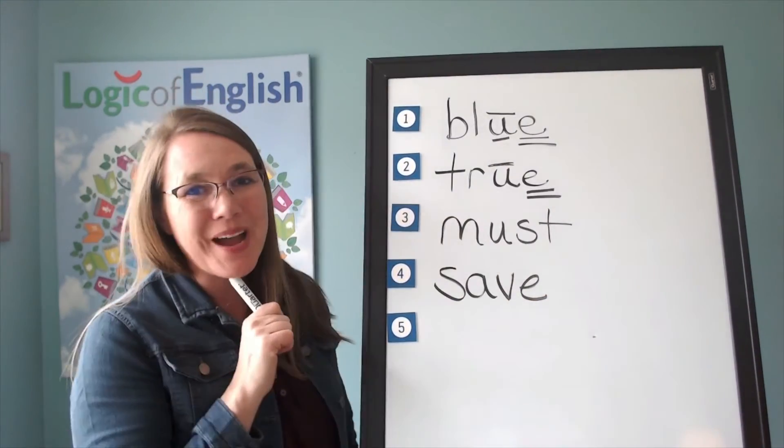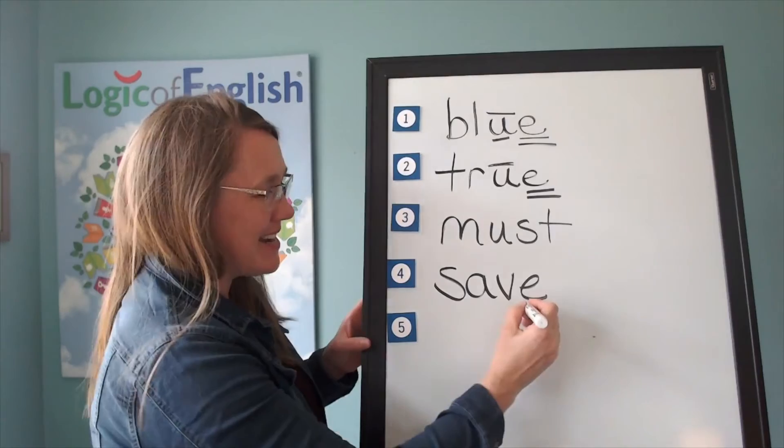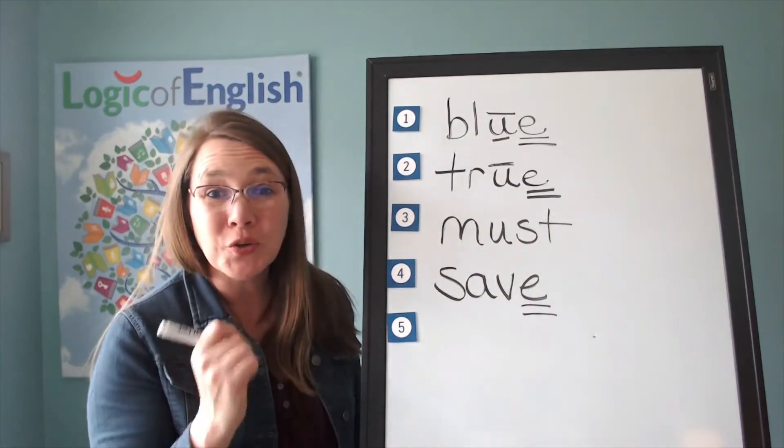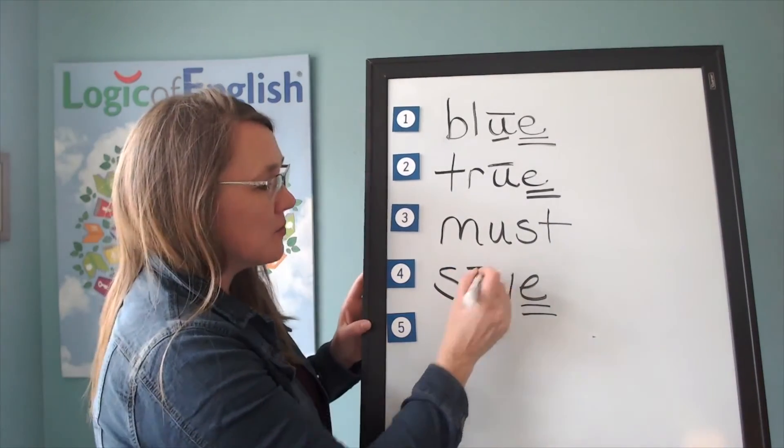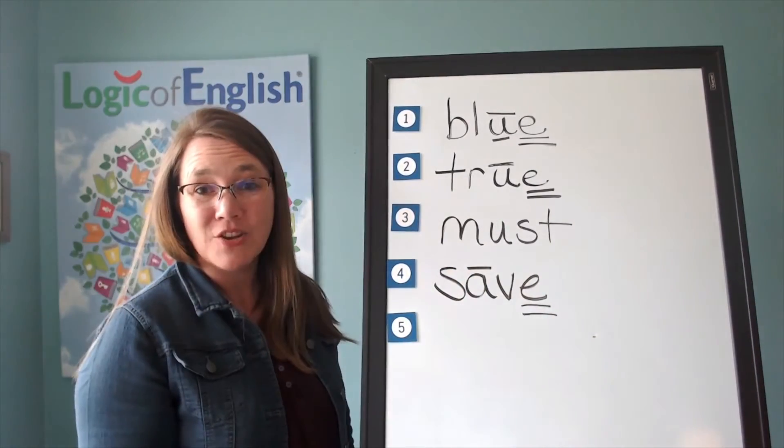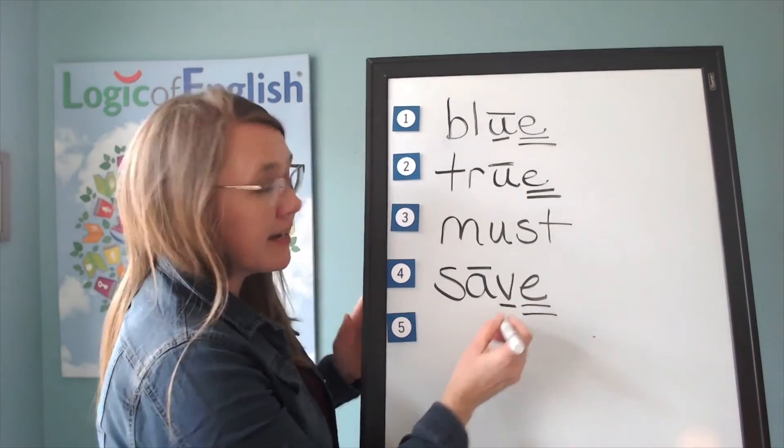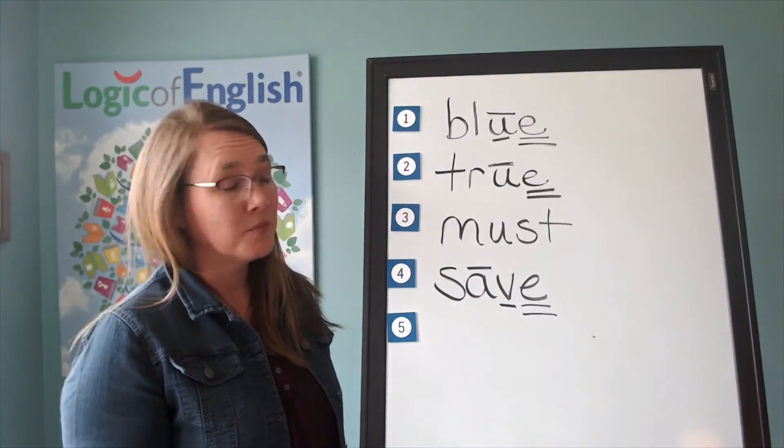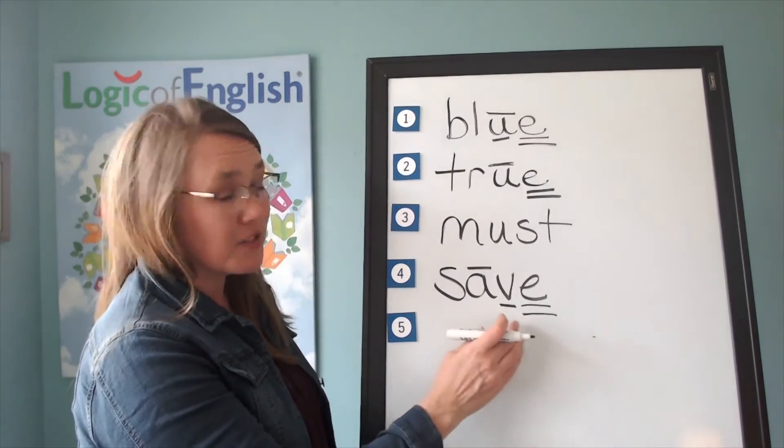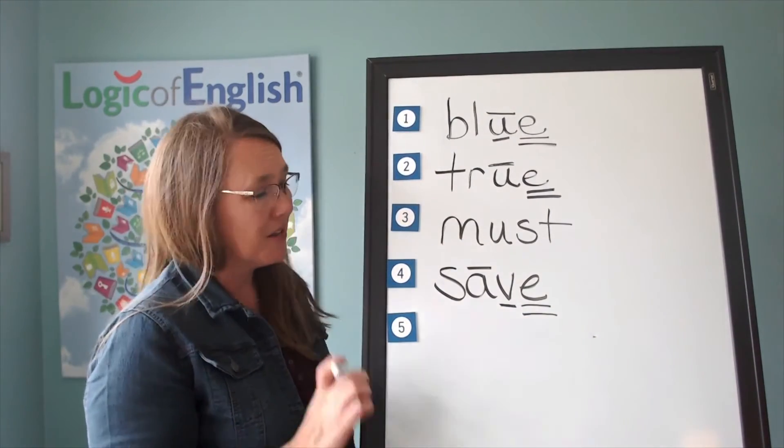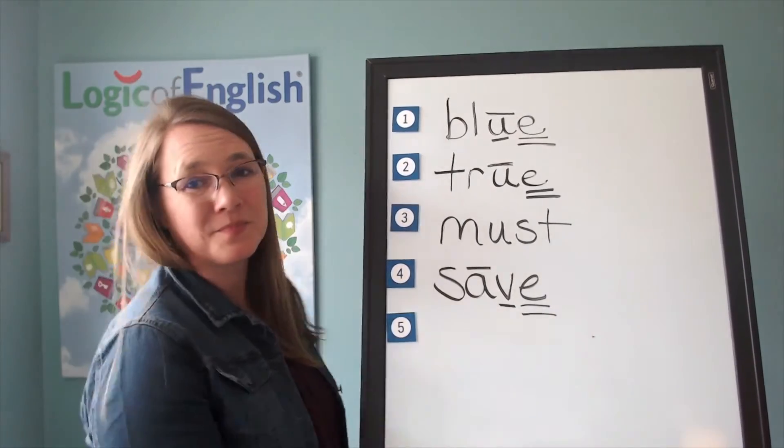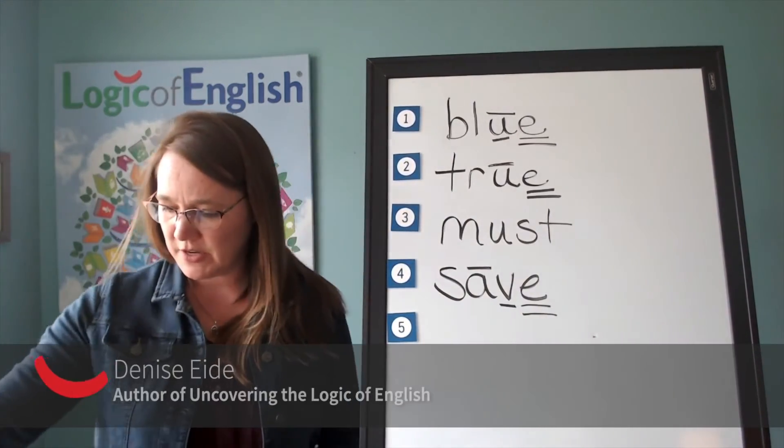All right. Why do we have a silent final E in save? Do you see? Oh, you're right. There's two reasons. The first one is to make the vowel say its long sound. And the second one is because English words do not end in V. So we have the E there to keep it from ending in V. Let's read it together. S-s. A-v. Save. Very good.